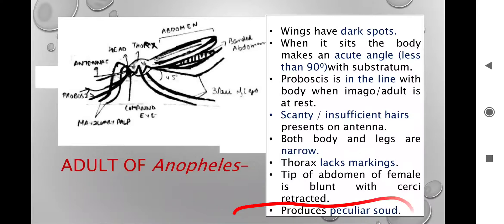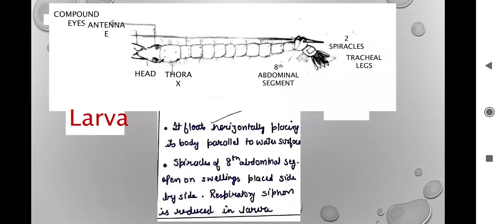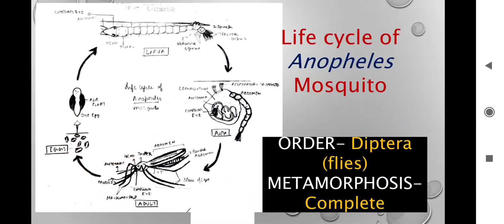So that is about the life cycle — I told you about the eggs, the larvae, the pupa, their structures, and characteristic identification points. The eggs are boat-shaped with lateral floats — that is Anopheles. The larva is horizontally parallel to the water surface — that is Anopheles. The pupa has respiratory trumpets. The body and proboscis are aligned in one line, and the body makes a 45-degree angle with the substratum — that is Anopheles.